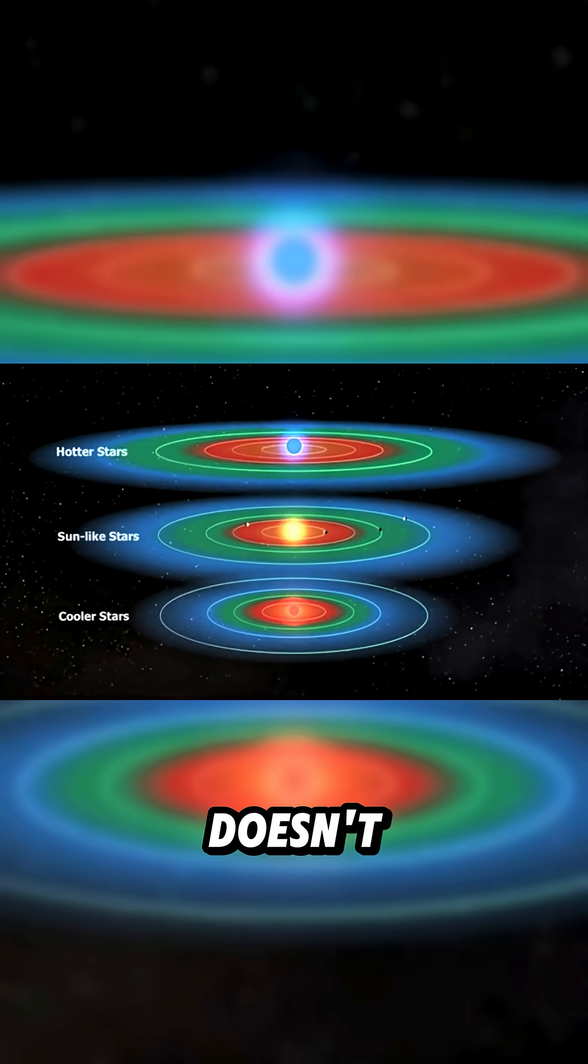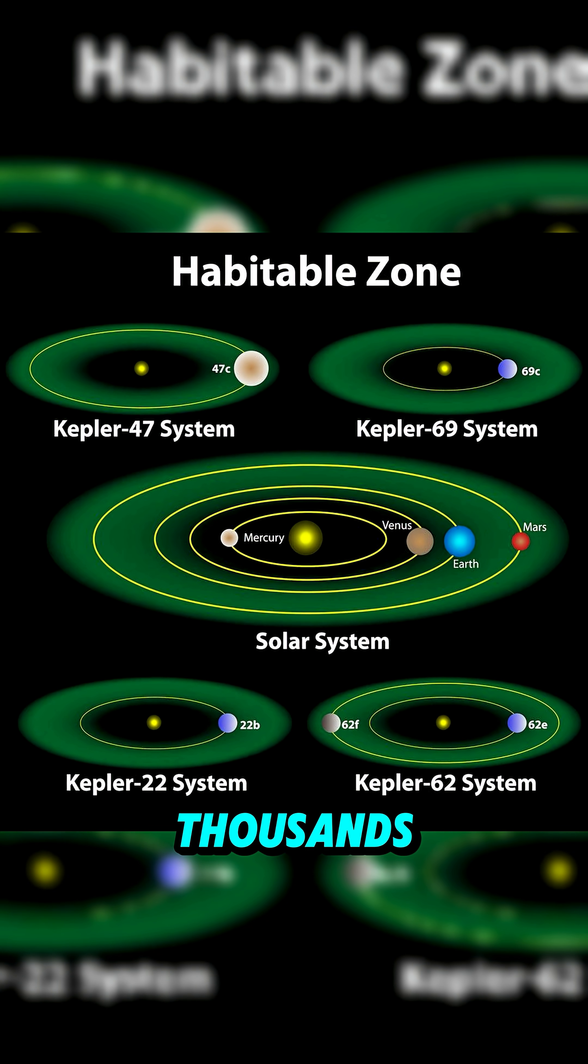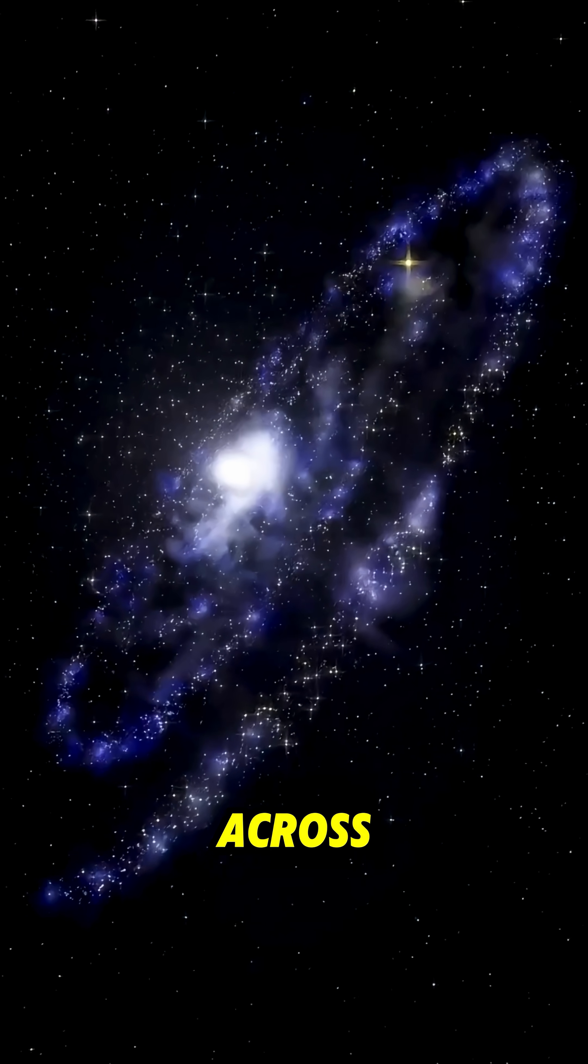So the habitable zone doesn't guarantee life. It simply marks the best place to search for it. Right now, astronomers have found thousands of planets in these zones across the Milky Way.